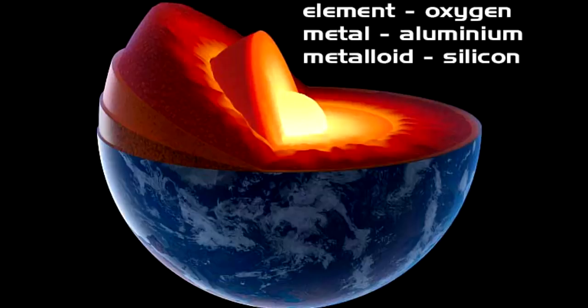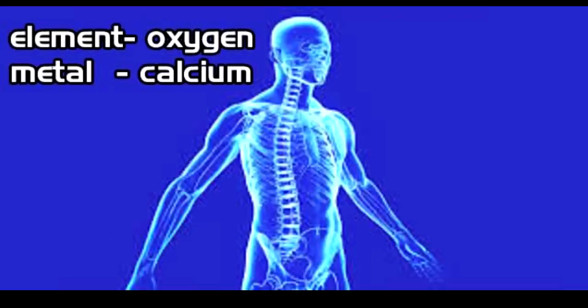The most abundant element in the crust is oxygen. The most abundant metal is aluminum. Silicon is also prominent in the crust. Now let's learn about the element of the human body.